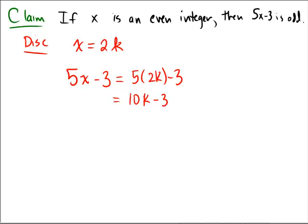Now we're hoping to show that this is odd. So that means that we really need to get it to be equal to something that looks like 2l plus 1 for some other l. So how can we make that happen? How can we force this to happen?